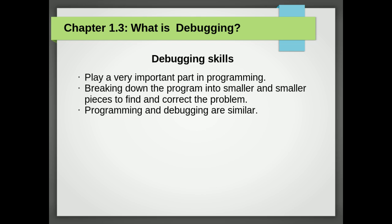For some people, programming and debugging are the same thing. That is, programming is the process of gradually debugging a program until it does what you want. The idea is that you should start with a program that does something and make small modifications, debugging them as you go, so that you always have a working program.